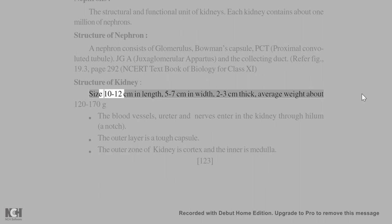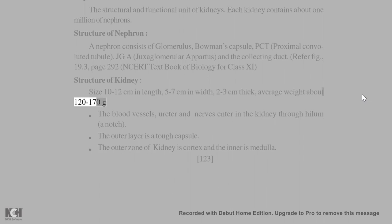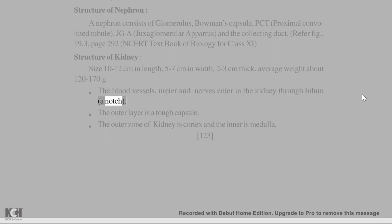Structure of kidney: size is 10–12 cm in length, 5–7 cm in width, and 2–3 cm thick. Average weight is about 120–170 g. Blood vessels, ureter, and nerves enter the kidney through the hilum, a notch.